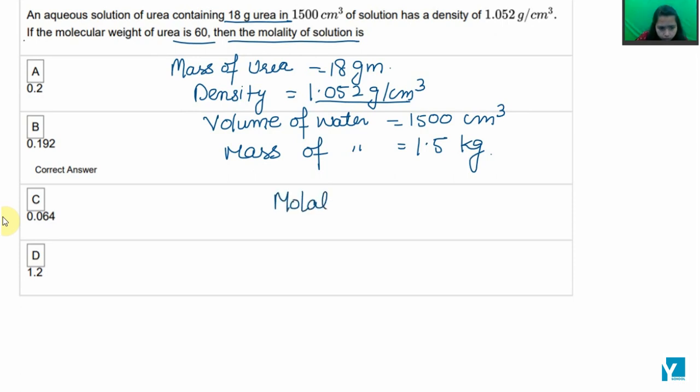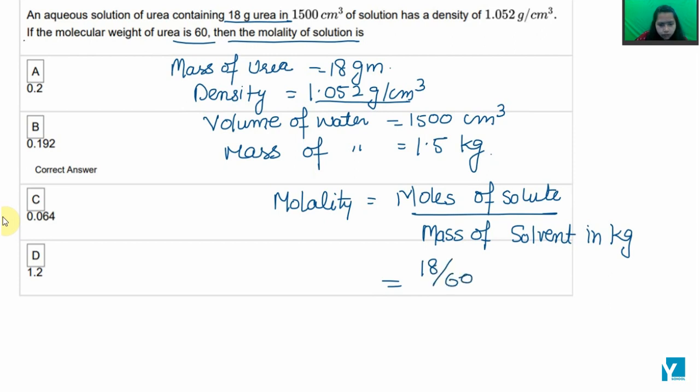So molality can be represented with the equation: moles of solute divided by mass of solvent in kilograms. Moles of solute will be 18 divided by 60. The solute is urea. Given mass is 18 and the molar mass is 60, so it would be 18 by 60.